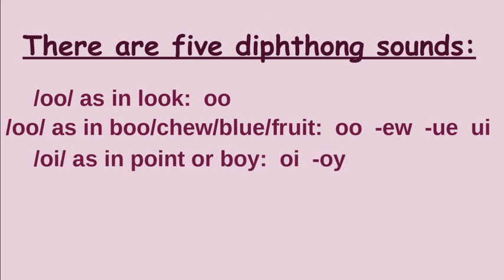My third diphthong sound is OI as in point or boy. So when I hear that OI sound in a word, OI is going to come at the beginning or the middle of a word, and OY is going to come at the end of a word or a syllable — like in boy: B-OY. It could also be at the end of a syllable, like in the word oyster. The first syllable is oy, so I'm going to use OY.